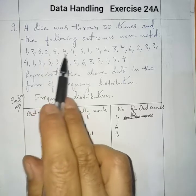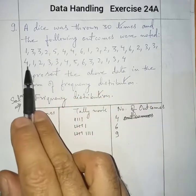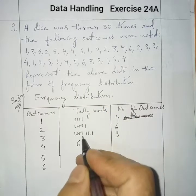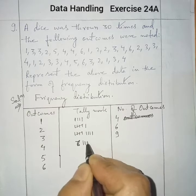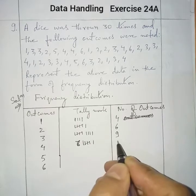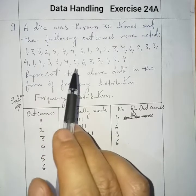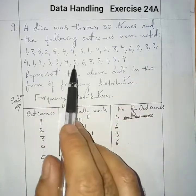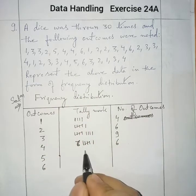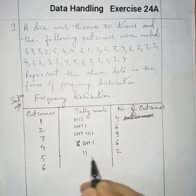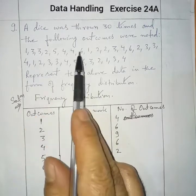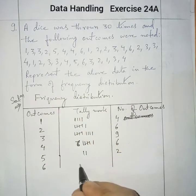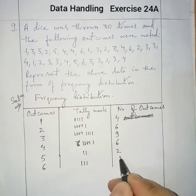For outcome 4, counting: 1, 2, 3, 4, 5, 6. So 6 fours are there — tally mark shows 6. For outcome 5, counting: 1, 2. So 2 fives are there. For outcome 6, counting: 1, 2, 3. So 3 sixes are there, and the number of outcomes for 6 is 3.